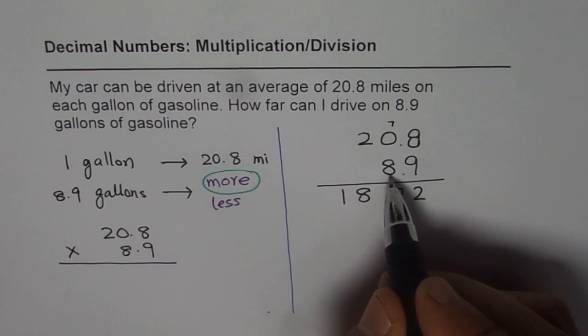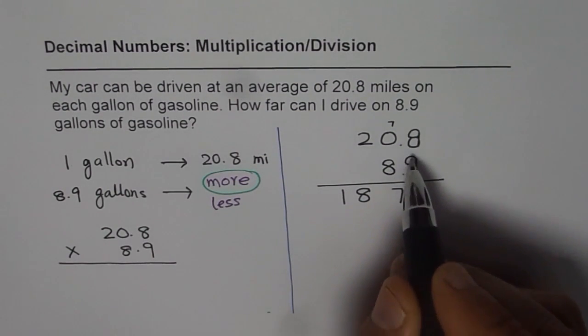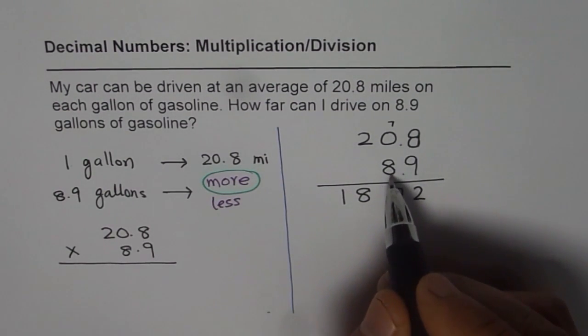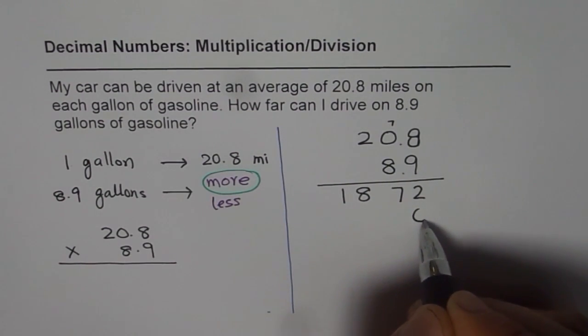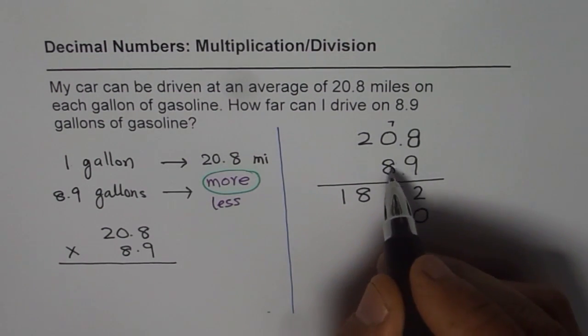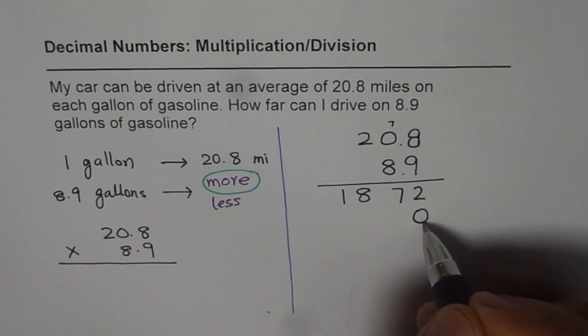8. Now 8 is in 10's position. Don't consider decimals. It is 80. 8 times 10 is 80, so 80 means put 0 here. Now we will multiply just by 8. We have already taken care of 10.